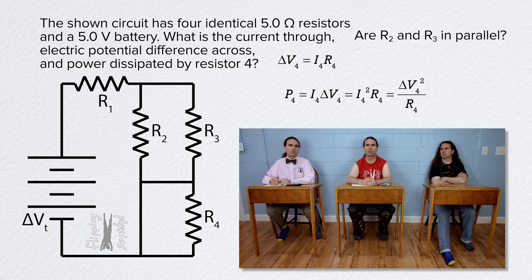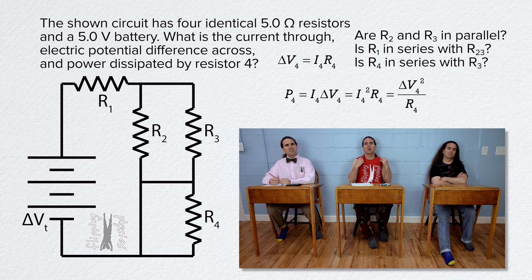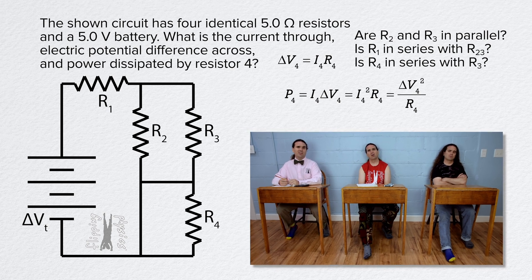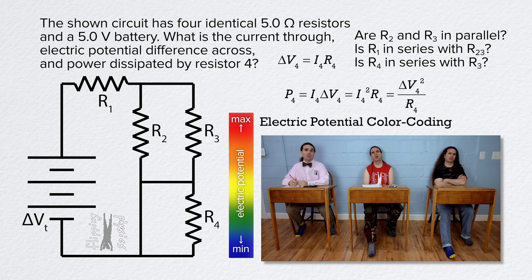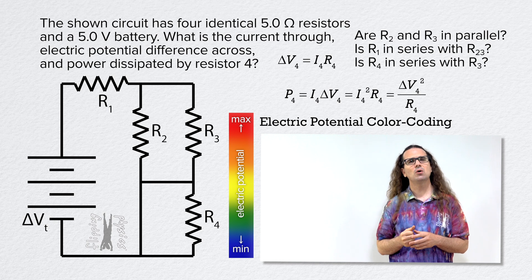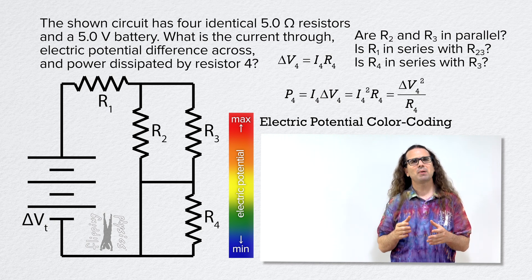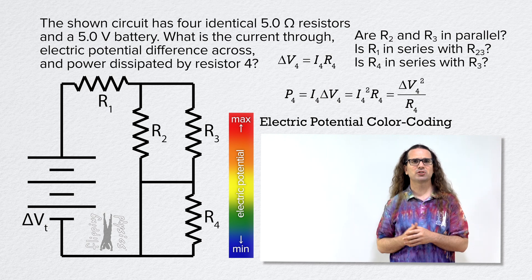Resistors 2 and 3 are in parallel, and resistor 1 is in series with equivalent resistor 2-3. Is resistor 4 in series with resistor 3? I think we should do the electric potential color coding technique. Good idea. The electric potential color coding technique is always a good place to start analyzing a circuit.